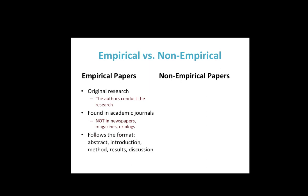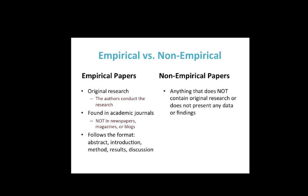Empirical papers follow a specific format. APA format means an abstract, introduction, method, results, and discussion. Non-empirical papers are anything that does not contain original research or does not present any data or findings — literature reviews, which are a summary of research on a particular topic, and opinion pieces and editorials. All of these may be found in peer-reviewed journals, but they are not empirical papers.